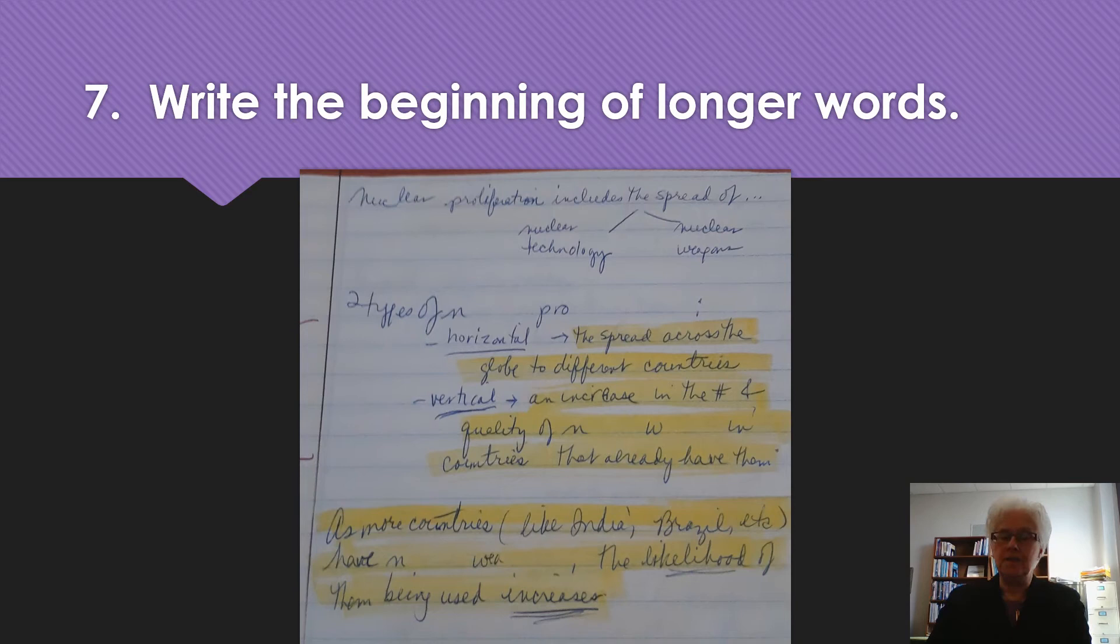Well, I recognized immediately that if I wrote out nuclear proliferation in full, I would miss the rest of the detail. So I wrote N and left a space, as you'll see, and then PRO and left a space. That enabled me to get the two types written down.